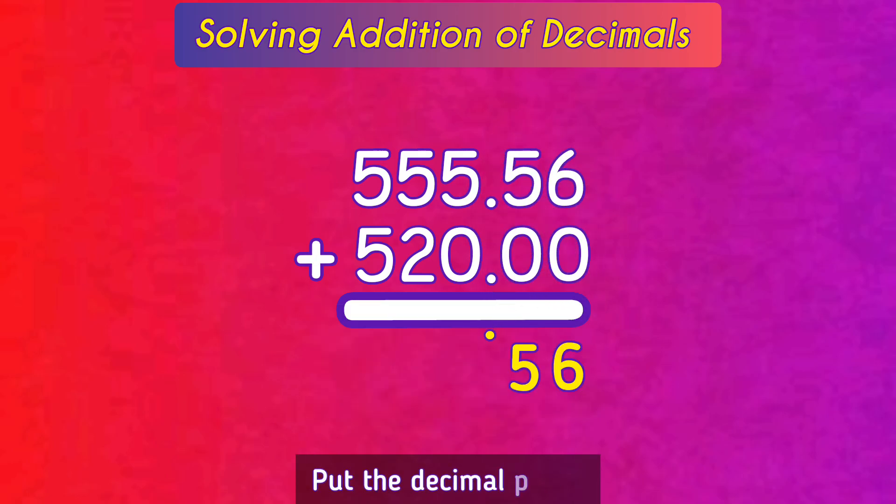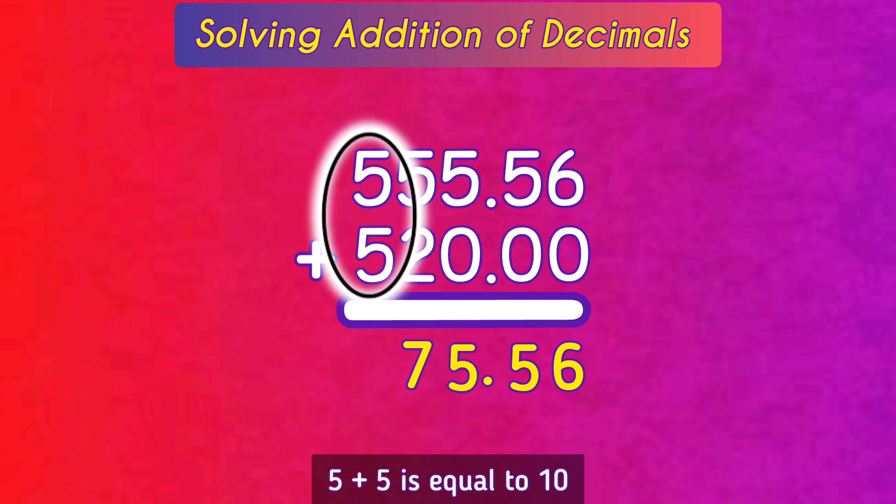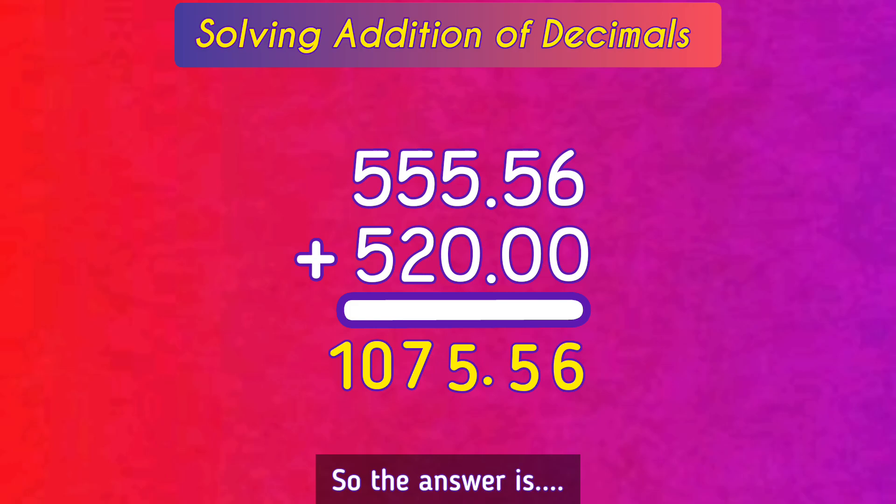6 plus 0 is equal to 6, 5 plus 0 is equal to 5. Put the decimal point. 5 plus 0 is equal to 5, 5 plus 2 is equal to 7, 5 plus 5 is equal to 10. So the answer is 1075.56. See, easy isn't it?